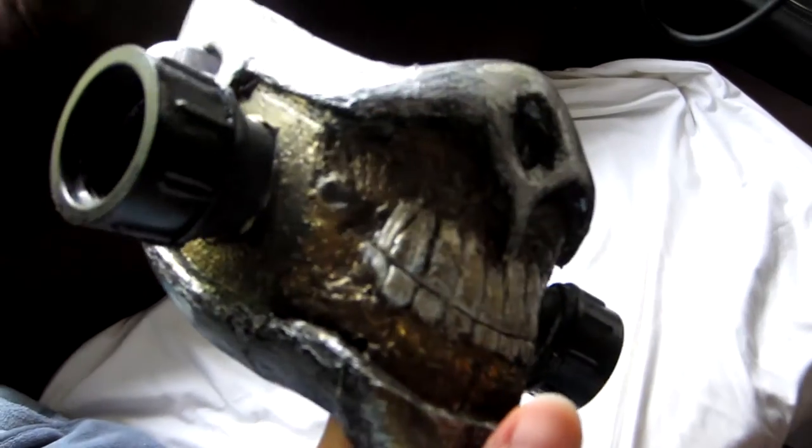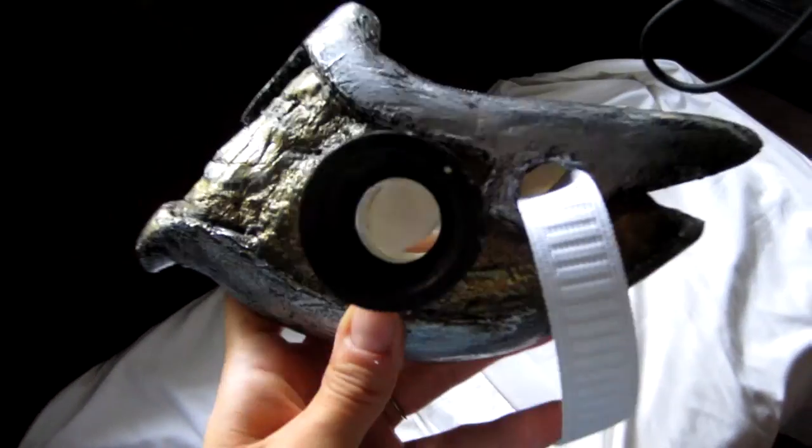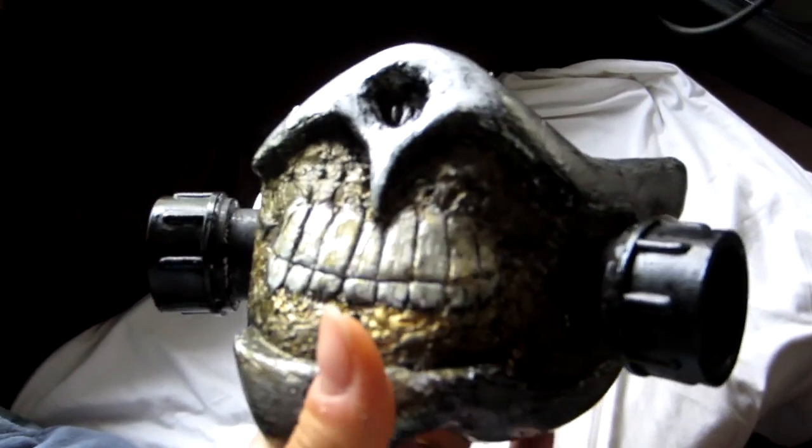Once all of that is dried, all you have to do is string your elastic through, make sure you measure the circumference of your head, hot glue it to the back and you're good to go. Your Immortan Joe's mask is ready to be worn and shown off at any convention.